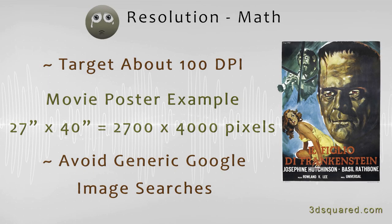For magazines, they target about 300 pixels per inch, but for large prints like what we work with, we target 100 pixels per inch. So for a 27 by 40 inch movie poster, the target resolution would be 2700 by 4000 pixels.